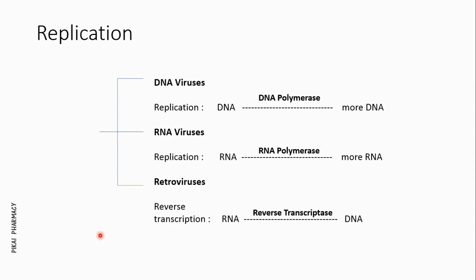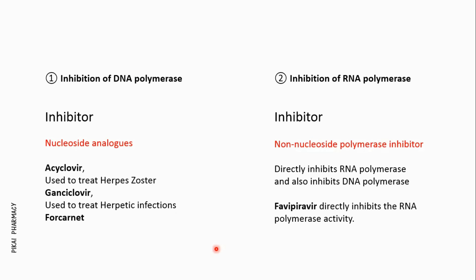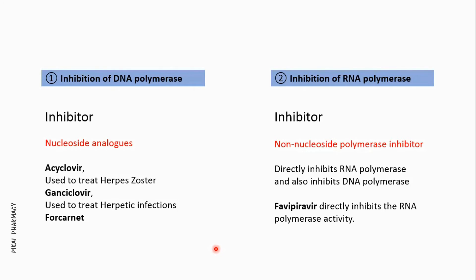Now we will discuss viral replication, which is a very crucial step in the viral life cycle. By undergoing replication, the virus increases its genomic content. There are three main types of viruses: DNA viruses, RNA viruses, and retroviruses. In this video we will only discuss inhibition of DNA and RNA viruses. Both DNA and RNA viruses use polymerase enzymes to replicate — DNA viruses use DNA polymerase and RNA viruses use RNA polymerase. If we can inhibit their polymerase enzyme, we can prevent their replication.